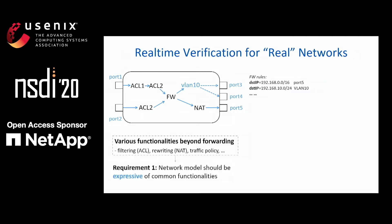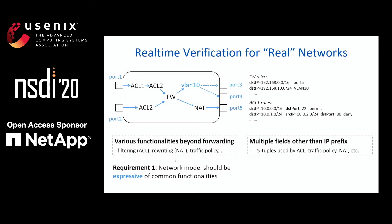To apply real-time verification to real networks, the first requirement is that the network model should be expressive enough to describe the common functionalities of real devices. Secondly, these devices often match on multiple fields — for example, ACLs often match on 5-tuples — and we'll show later that this will introduce scalability issues for equivalent classes. So our second requirement is that the update of equivalent classes should be still scalable when there are multiple match fields.